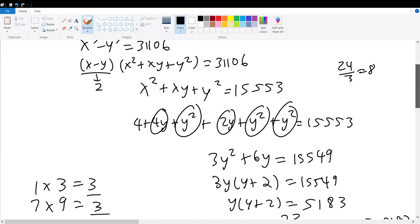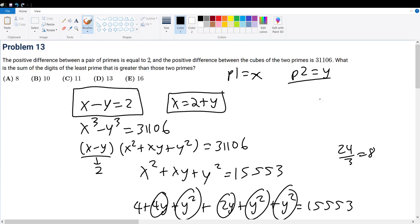I factored it. I know what y might be: y could be 71 or 73. We're trying to find the sum of the digits of the least prime that is greater than those two primes. So x and y—x must be the greater of these two, so this is x and this is y.